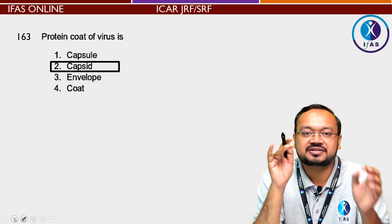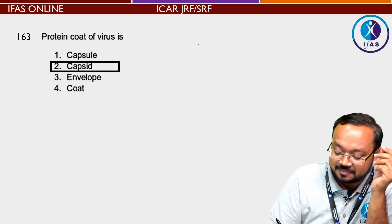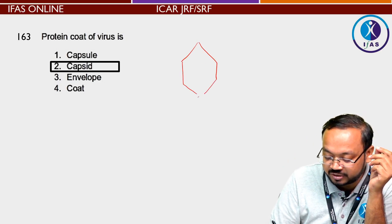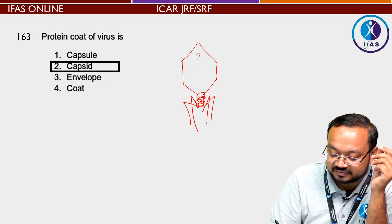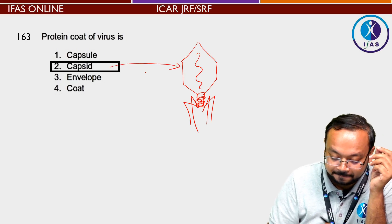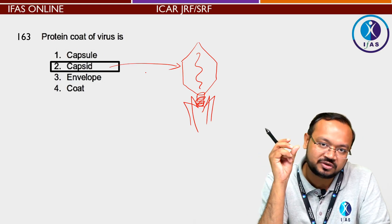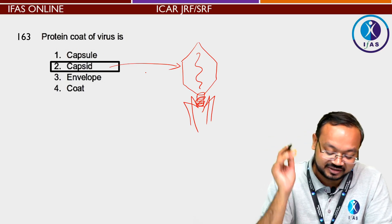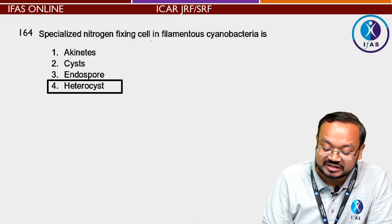Next question: Protein coat of virus — virus के ऊपर protein की जो coating present होती है उसे क्या कहते हैं? Example के तौर पर bacteriophage में यह hexagonal cap-like portion है जो protein का बना होता है। इसे simply capsid कहा जाता है। Capsule term generally bacteria के case में use किया जाता है।